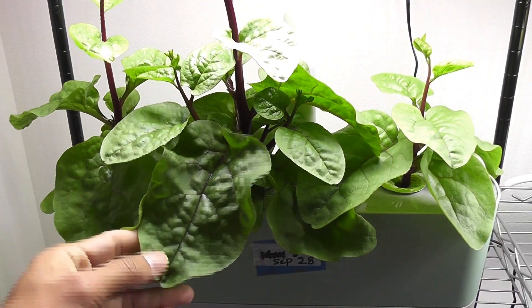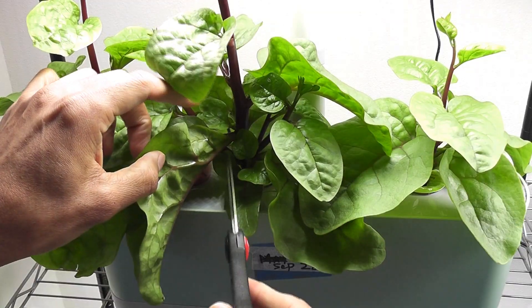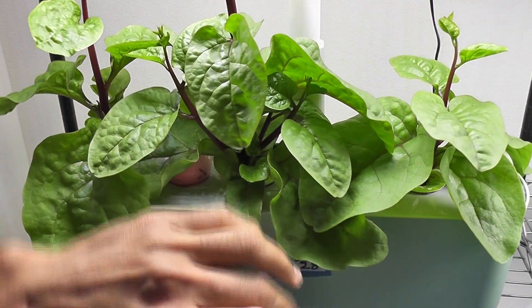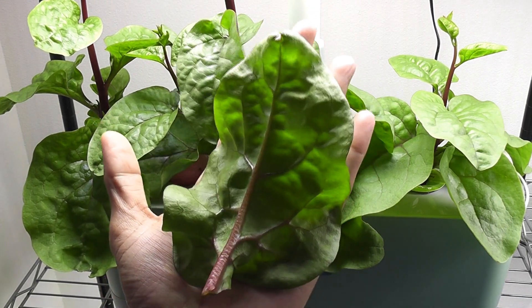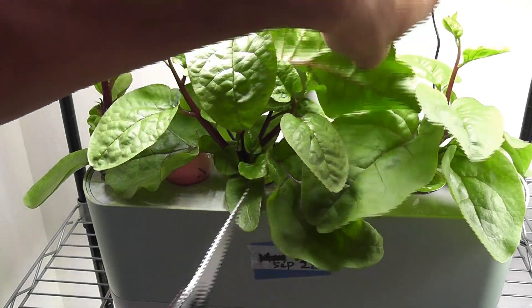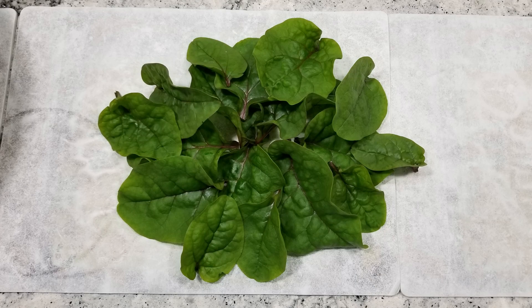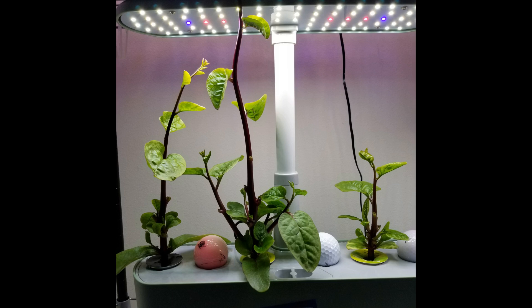Now that the leaves have grown big enough, I am going to harvest the first batch. Look at this huge leaf. It covered most of my palm. Here is the first harvest. It's a very good amount of greens. This is just the beginning. I will post the updates as plants make more progress.